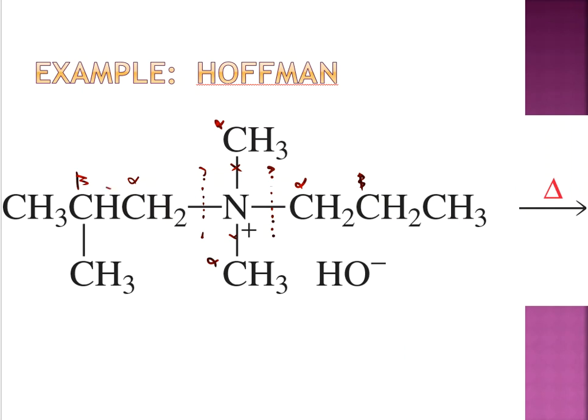This carbon to the left does have a beta hydrogen - it's right there. And the carbon to the right-hand side also has beta hydrogens - there are two of them. So both of those are fair game. Both of those are possible choices in the Hoffman reaction going forward. To the left, I have a possibility of that hydrogen getting pulled off, and to the right, I have a possibility of that hydrogen getting pulled off. The OH group is going to have to make a decision on what to do.